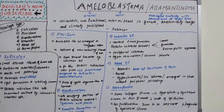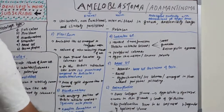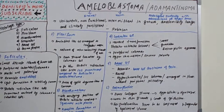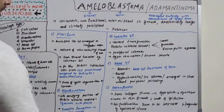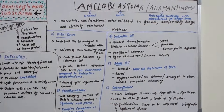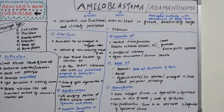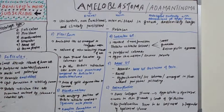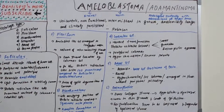The desmoplastic type has dense collagen stroma which is hypocellular and hyalinized, growing in thin strands and cords of epithelium. This proliferation appears compressed and fragmented by the hyalinized stroma — the compression makes the stroma appear fragmented.